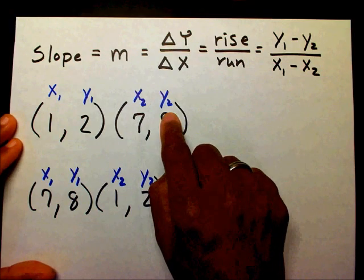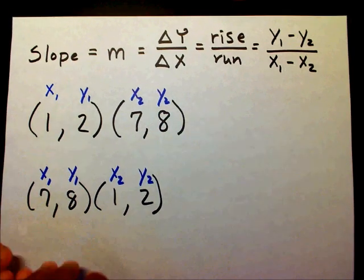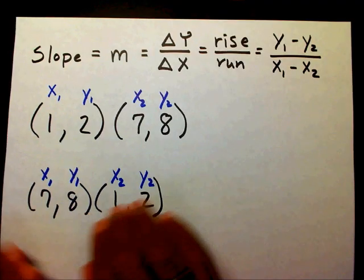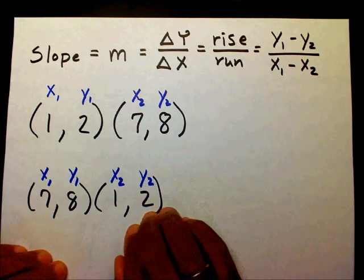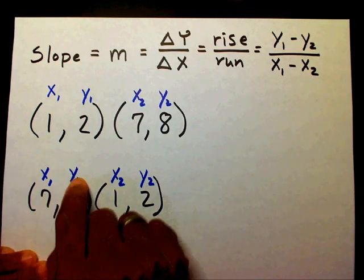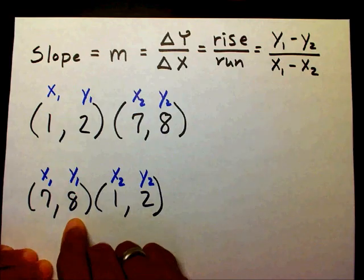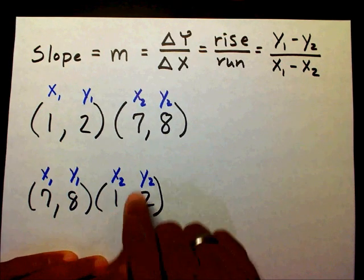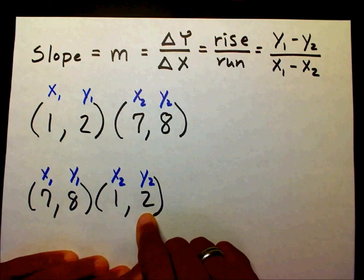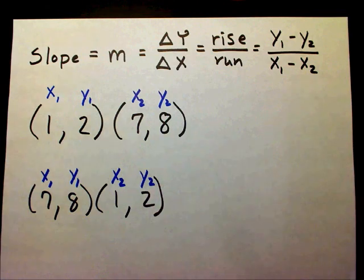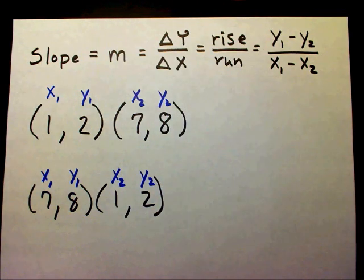If I interchange them, then this will be my first pair and this will be my second pair — so this is now my first X and my first Y, and this is now my second X and my second Y. It doesn't matter as long as you keep your pairs or your coordinates together.